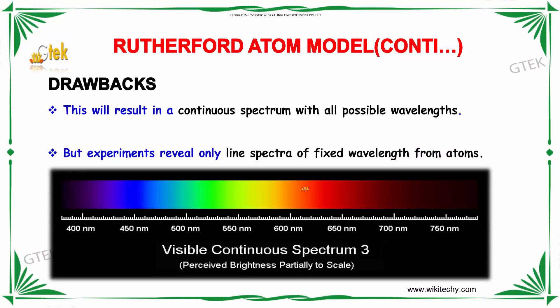This would result in a continuous spectrum with all possible wavelengths, but experiments revealed only line spectra of fixed wavelengths from atoms. That is why the Rutherford atom model does not account for some of the major features related to the spectrum.